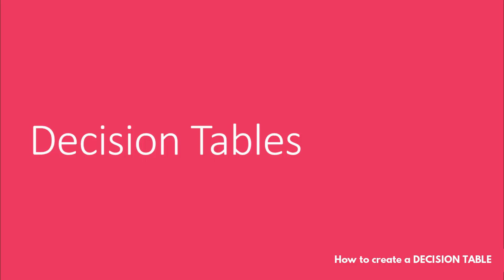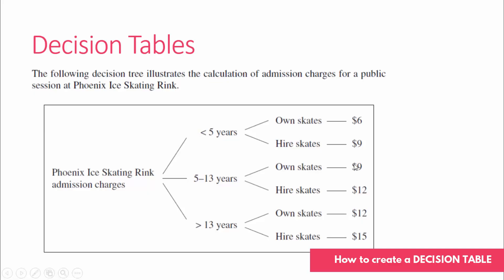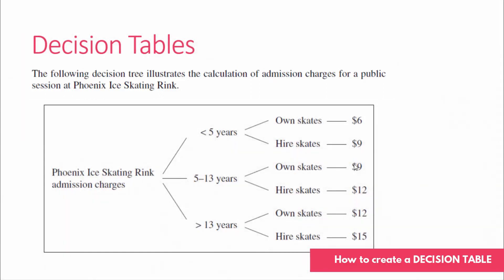Hi and welcome to this tutorial. Today we are going to look at how to create a decision table. We have a sample question here about a decision tree — this is all about an ice skating rink. If you're under five years old and have your own skates, you get a certain price for admission. But if you're older than 13 and you need to hire skates, you get a different price of admission.